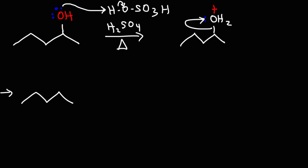So now what we have here is a secondary carbocation intermediate. In the next step, a base is going to come in and abstract a proton. Now the base that we could use can be water or it could be the bisulfate ion. It really does depend on the relative concentration of water and sulfuric acid — we don't know what the concentration of the solution is. So whichever base is close by, it can abstract a proton.